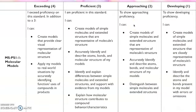Now let's take a look at the rubric that will be used to assess you on this assignment. In order to score a three or proficient on this standard, you will be able to create models of all of the simple molecules and the larger structures that are exactly representative of the molecule structure — meaning your models look exactly like what a molecule of that compound actually looks like. You will also need to accurately identify all of the atoms, bonds, and the molecular structure of your model, and be able to identify and explain the differences between the simple molecules and the extended structures, using your models as evidence to support that comparison.